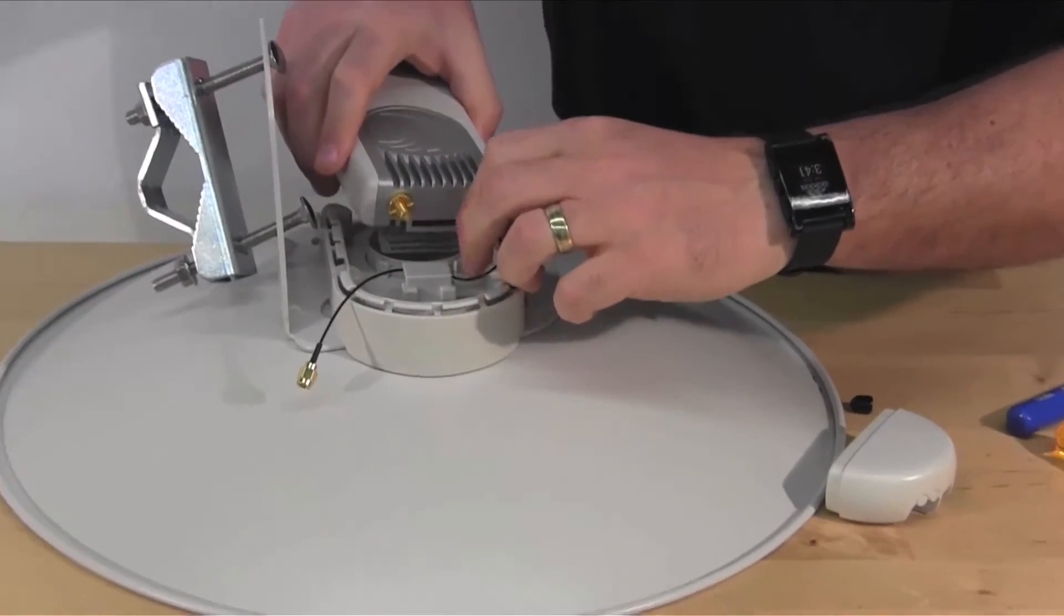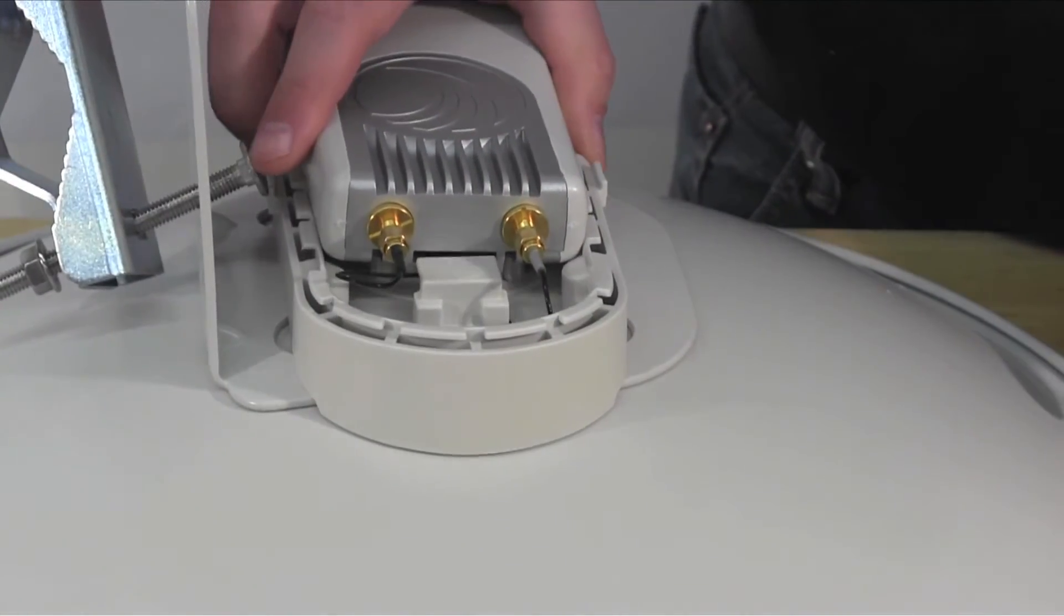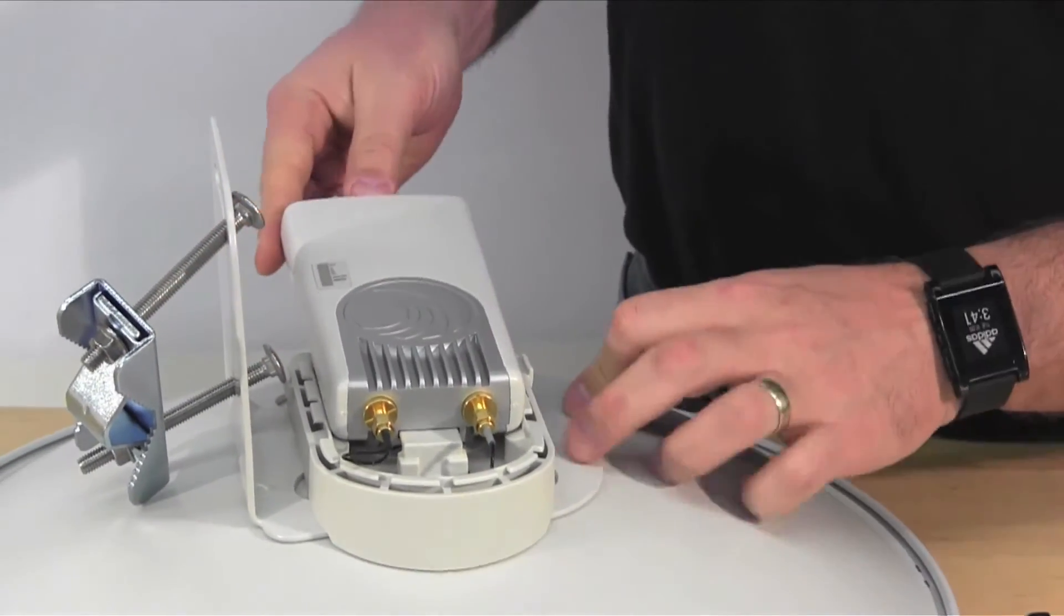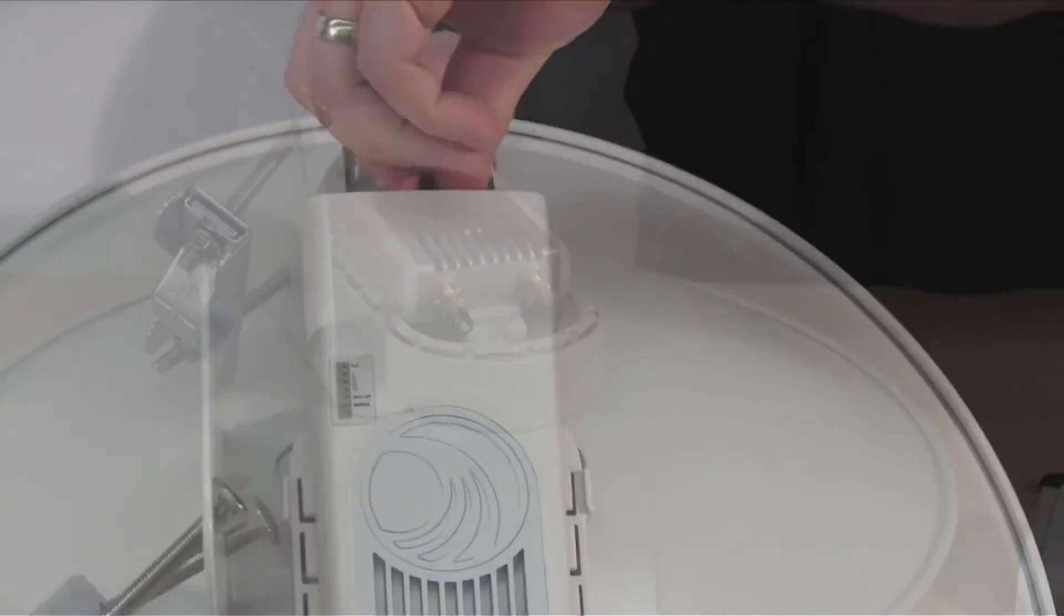Install the radio by first connecting the RF cables to the radio. Proceed by sliding in the radio housing into the clip on the shoe. Be careful to avoid catching the cables between the radio housing and the shoe. Attach the radio to the shoe by tightening the thumb screws.